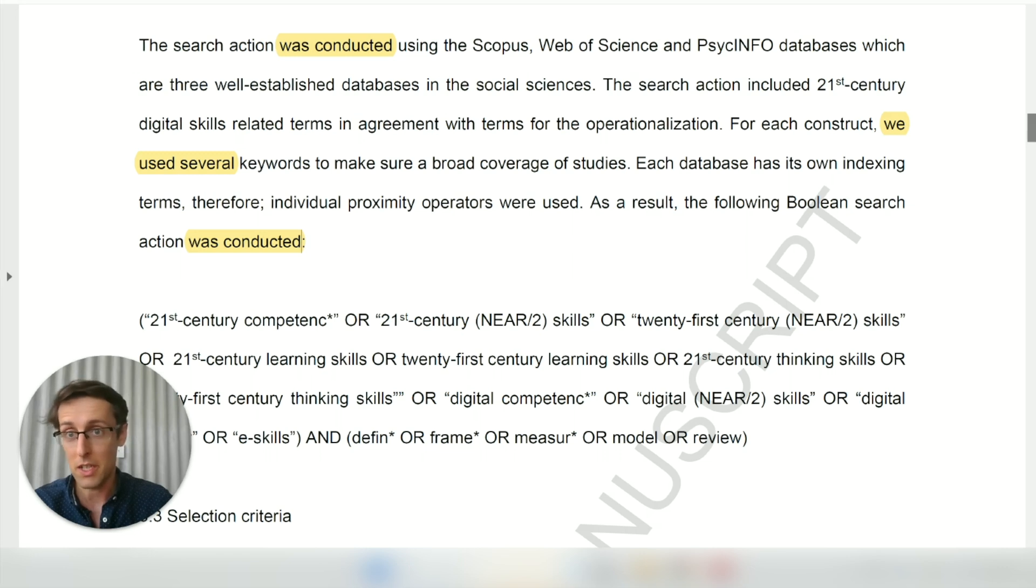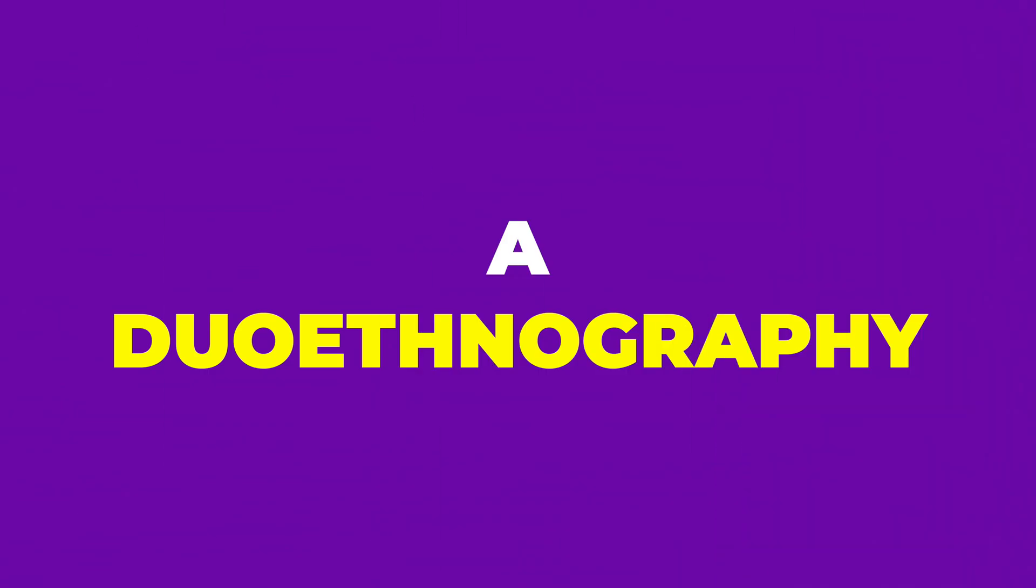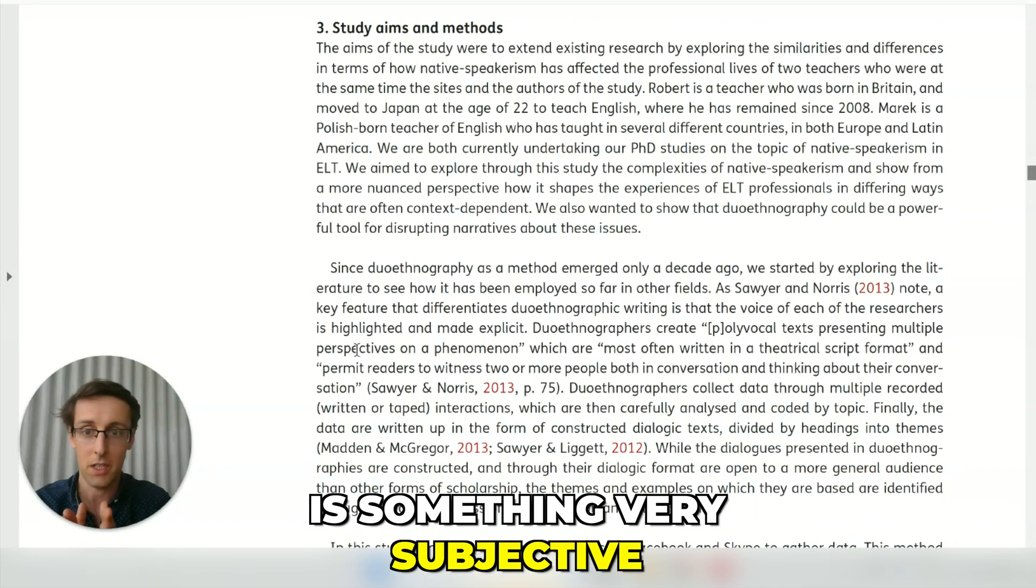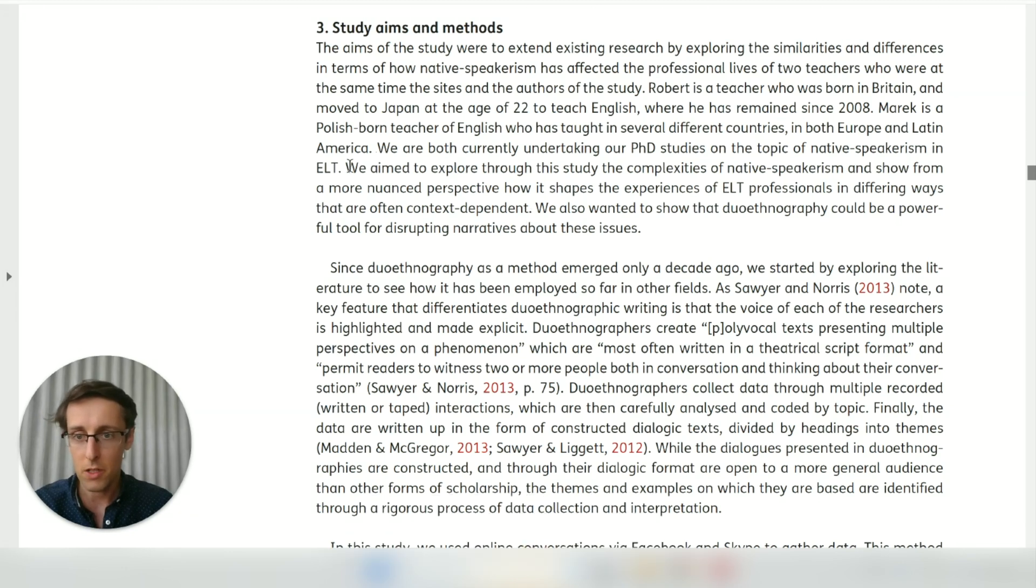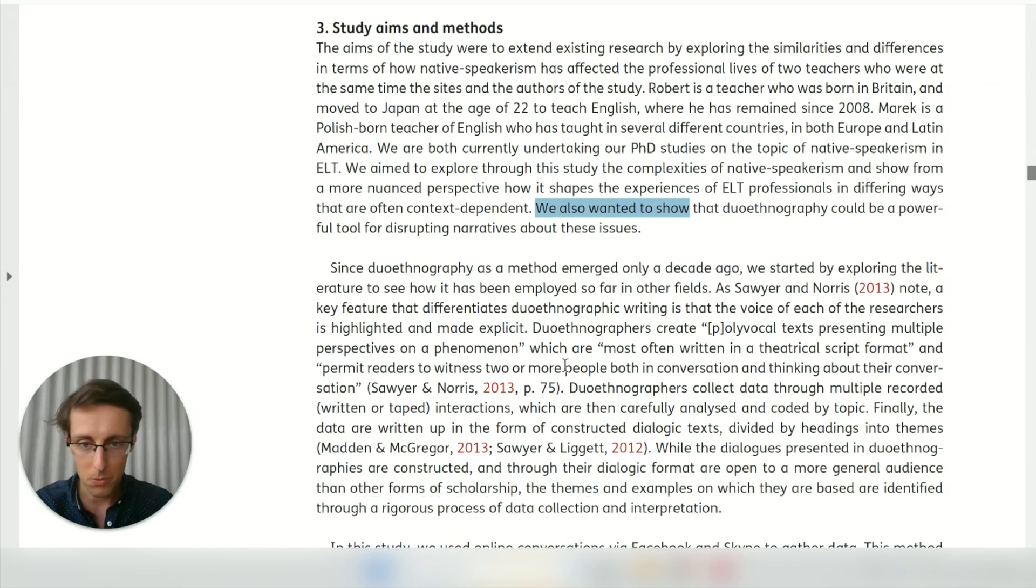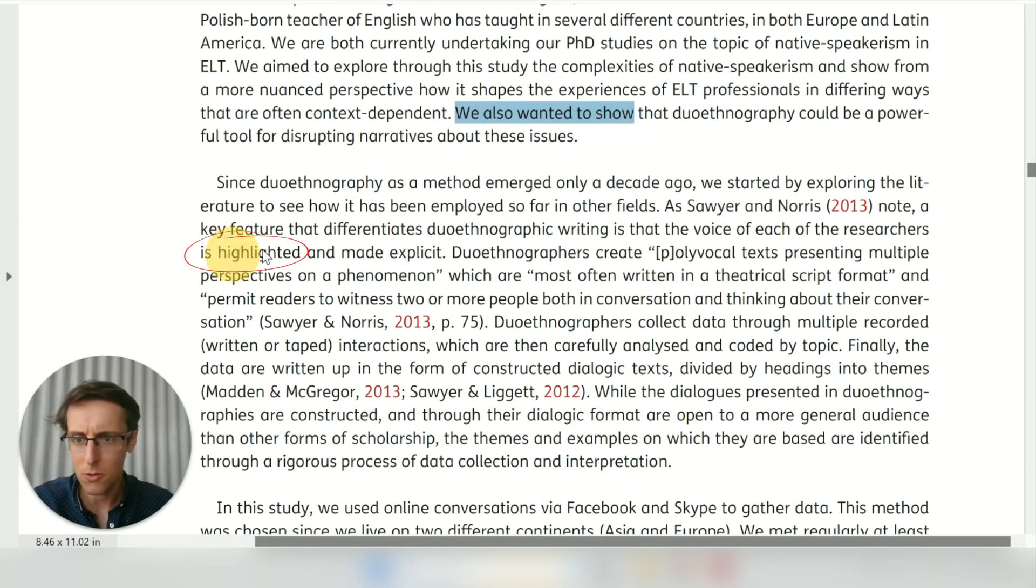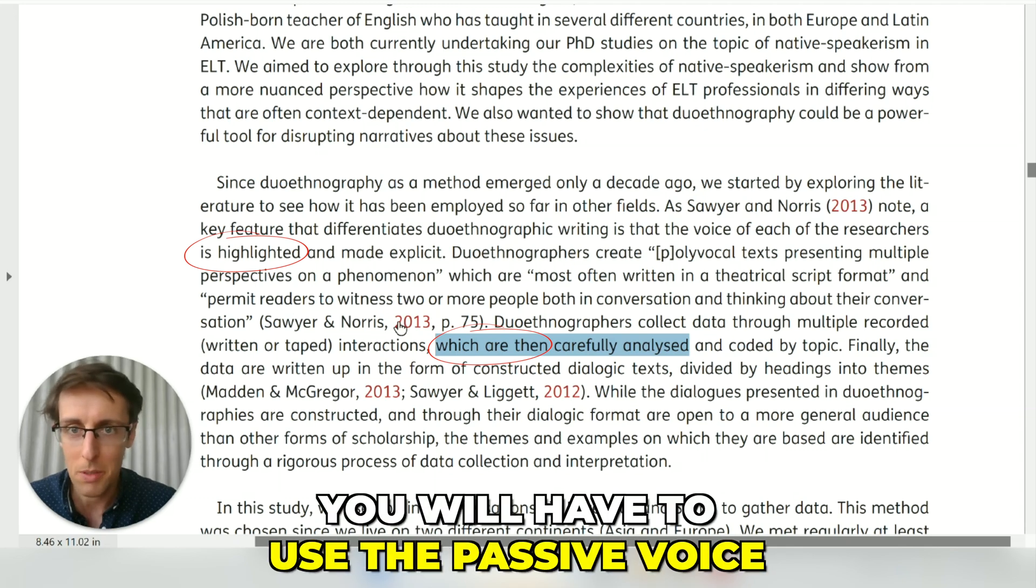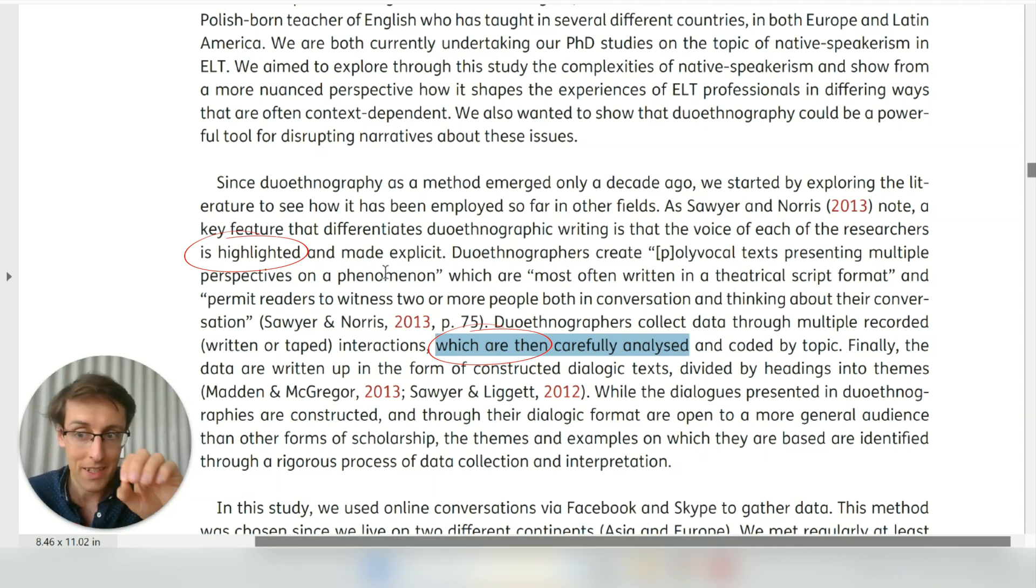The last example that I wanted to show you is something very, very qualitative—it's a dual ethnography. An ethnographic study is something very qualitative, very subjective. So in here, of course you will see we more often. For example, we aimed to, we also wanted to show. However, you will also see passive voice. For example, we've got is highlighted in here—so that's passive voice. You've got another example in here which are then carefully analyzed—that's also the passive voice. Again, just to reiterate, in no field, no matter how qualitative it's going to be, will you use we exclusively. You will have to use the passive voice.